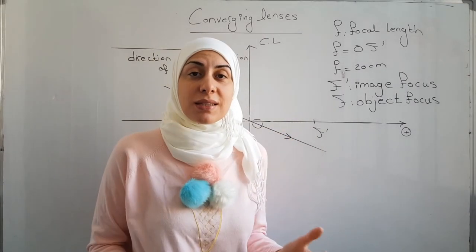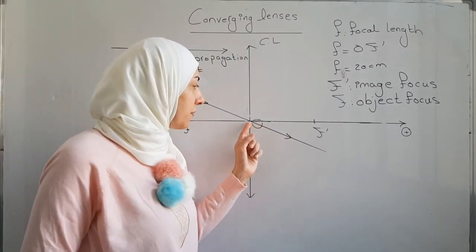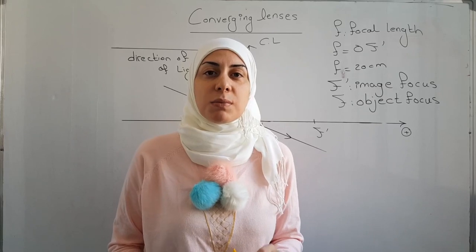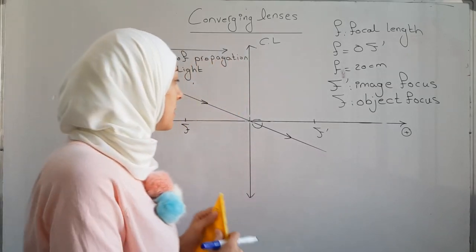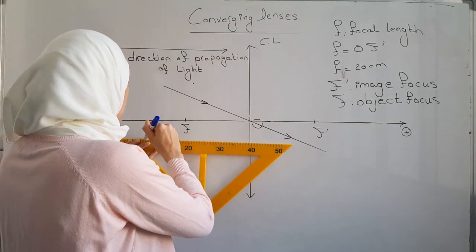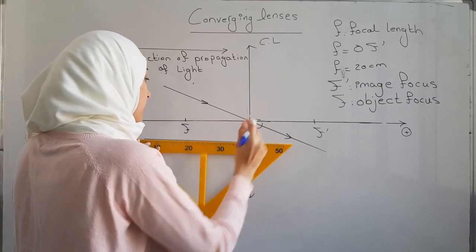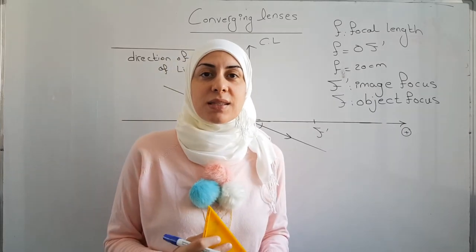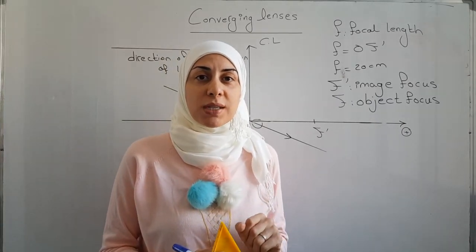It means that it doesn't change its direction after hitting the lens. The second ray of light is the one that comes parallel to the optical axis. So if you have a ray of light that is parallel to the optical axis, it emerges out of the lens passing through the image focus f prime.